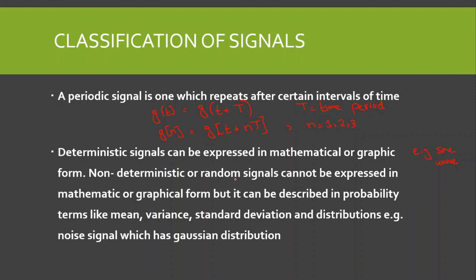Non-deterministic signals are also called random signals or probabilistic signals. They cannot be expressed in mathematical or graphical form. Instead, we use probability terms like mean, variance, standard deviation, or distributions to describe them. A typical example of a random signal is noise — for example, noise can be described using the Gaussian distribution. This was all about the classification of signals. Thank you.